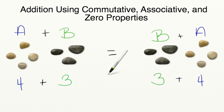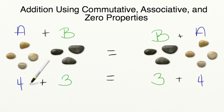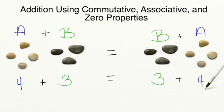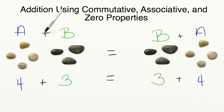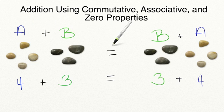According to the commutative property, 4 plus 3 has the same value as 3 plus 4. We can write that in a formula by saying A plus B is equal to the value of B plus A.